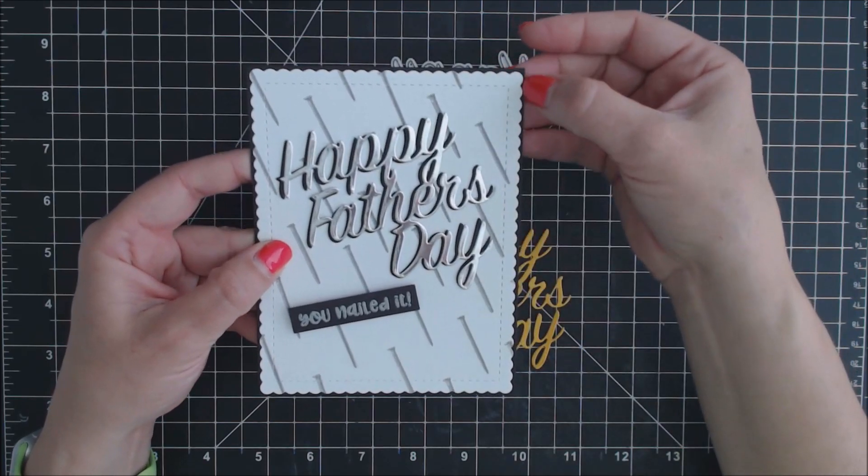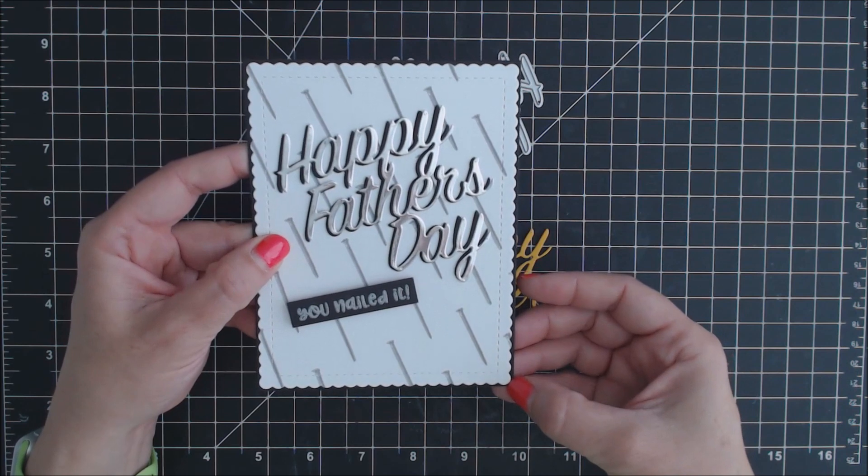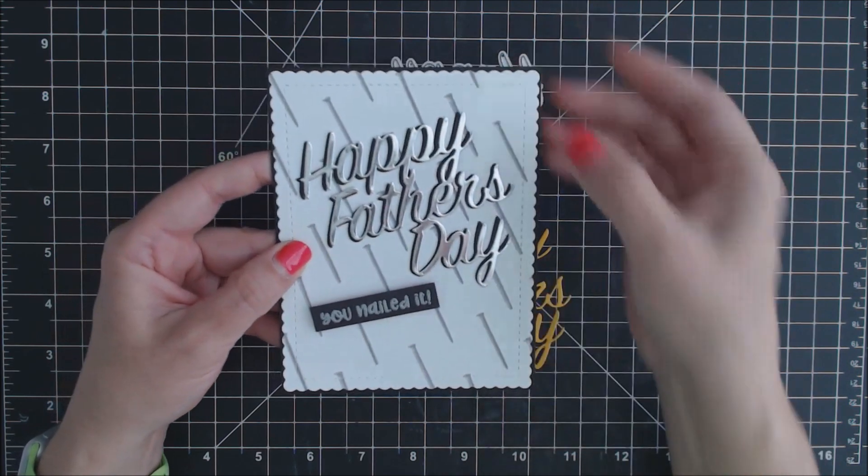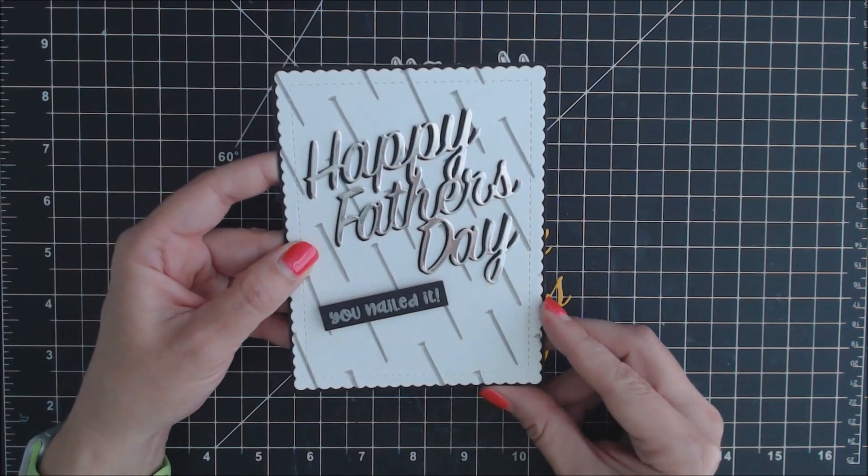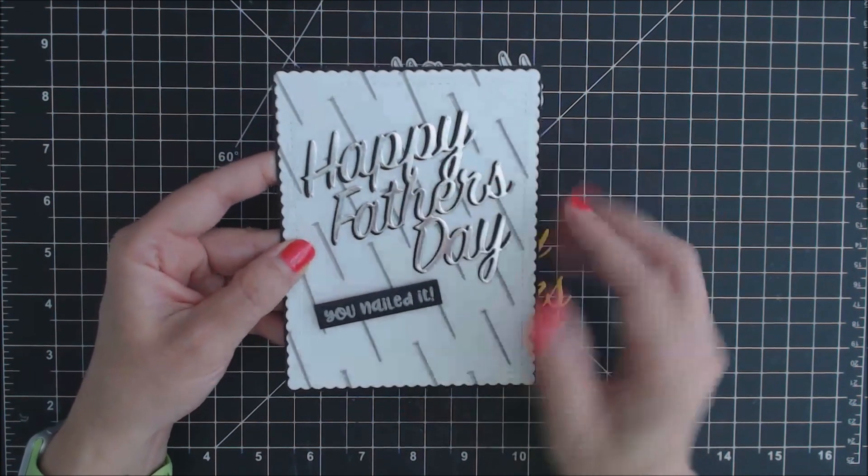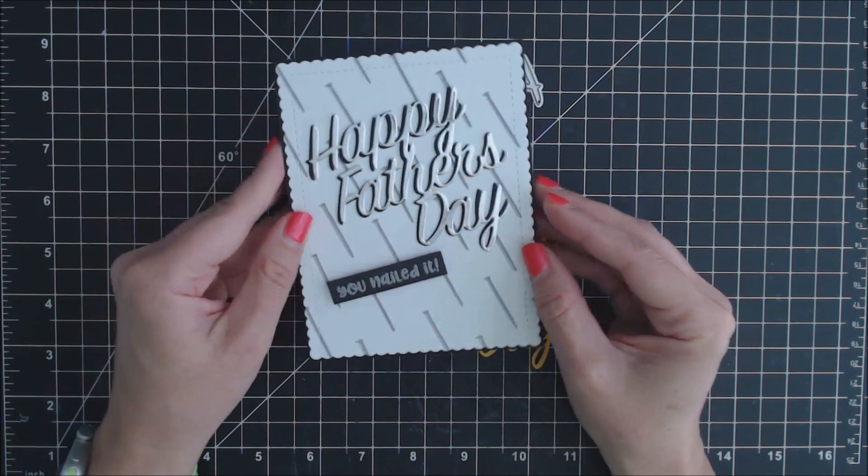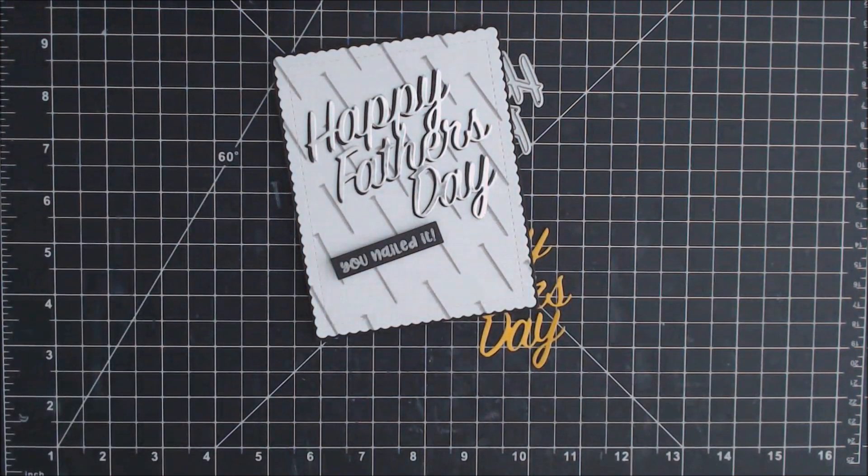I also used the largest stitched scalloped rectangle die on this card. And then the stamp set is the Dad's Tools that was released last month that will go great with this Happy Father's Day die. Here are some still shots of all the dies and the dimensions on the dies as well as the examples of cards that I've created with these dies. I'll have links down below to the new items and to the Cat Scrappiness shop. Thanks for watching. Bye!